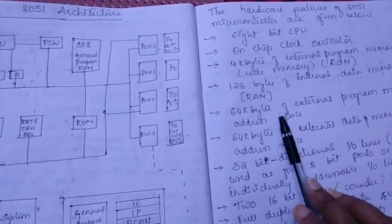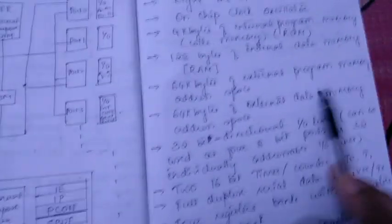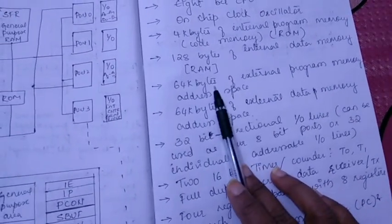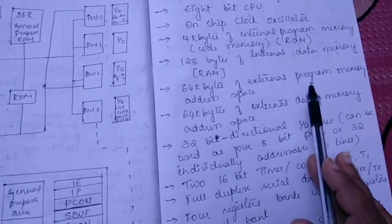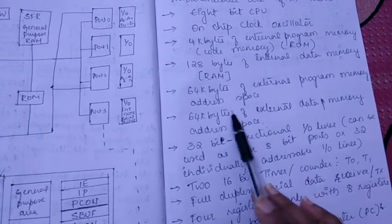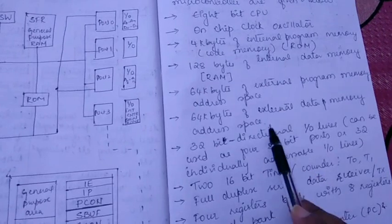Next you have 64 kilobytes of external program memory address space. That is extendable address space. External ROM and external RAM is 64 kilobytes. RAM and ROM extendable are same.